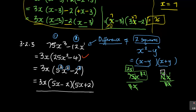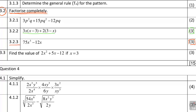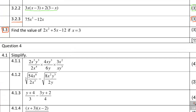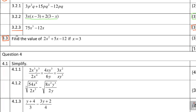How were they going to mark you? They'll mark you for the 3x part, for one bracket, and for the other bracket — that gives you 3 marks. So this is how you approach question 3.2.3 where they say factorise completely. That gets you your 3 marks. Now let us look at the last one in this section — find the value of 2x² + 5x − 12 if x = 3. This one is 3 marks.